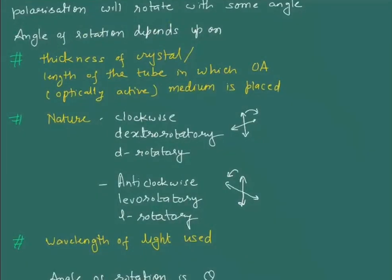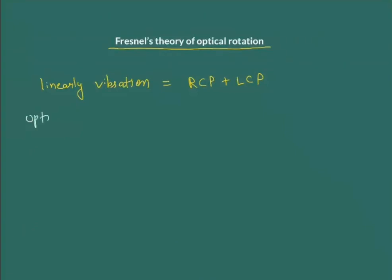If the nature is clockwise it is called dextro-rotatory, where the plane of polarization rotates in the clockwise direction, and if it is levo-rotatory, the plane of polarization rotates in the anti-clockwise direction. In a dextro-rotatory material, RCP will travel faster compared to LCP, and in a levo-rotatory material, LCP will have a faster speed compared to RCP.